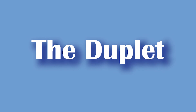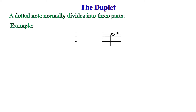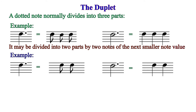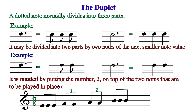Now let's discuss the duplet. What was applied to undotted notes in triplets could be reversed for dotted notes. A dotted note normally divides into three parts, but this time it may be divided into two parts by two notes of the next smaller note value. That is, a dotted crotchet, instead of being three quavers, will now be played as two quavers in the same time frame. And a dotted minim, instead of being three crotchets, will be represented by two crotchets played in exactly the same time. It is notated by putting the number two on top of the two notes that are supposed to be played in place of three, indicating it is a duplet.